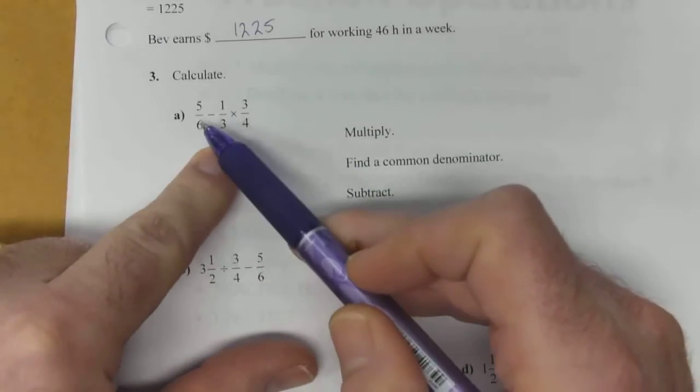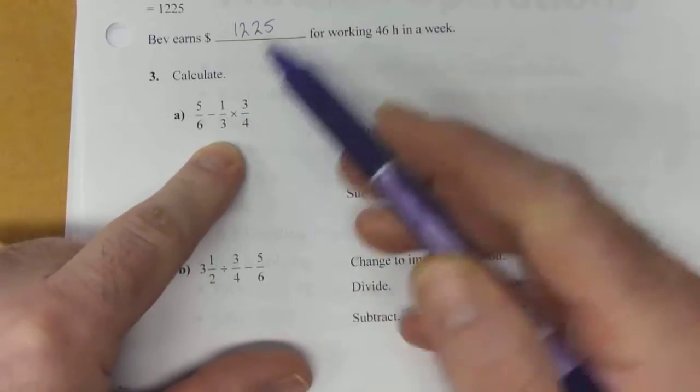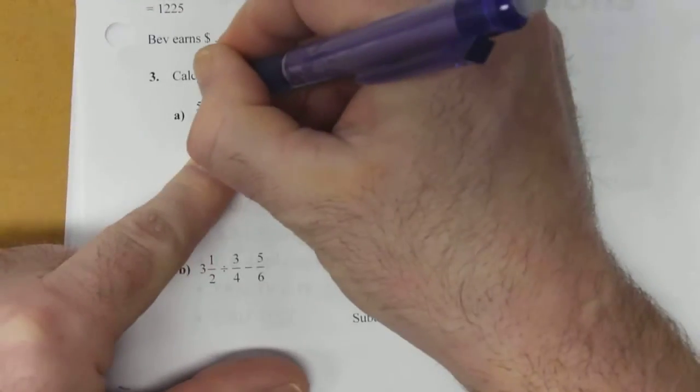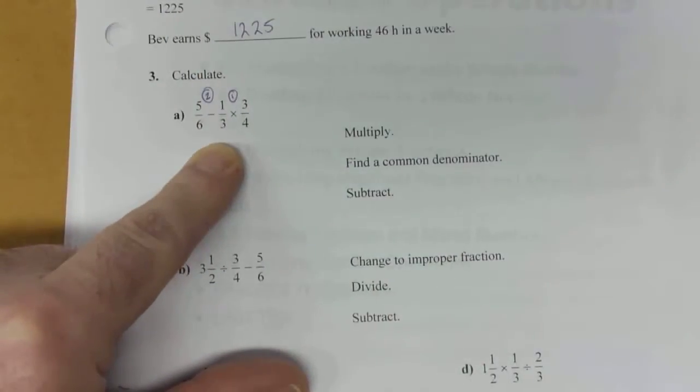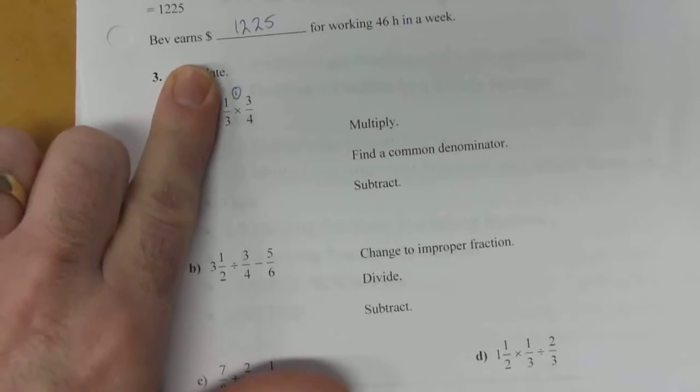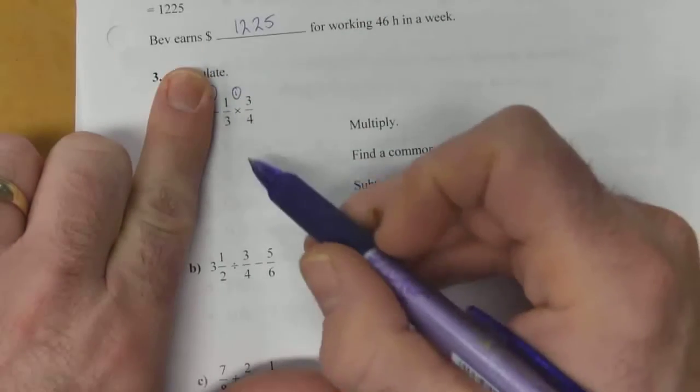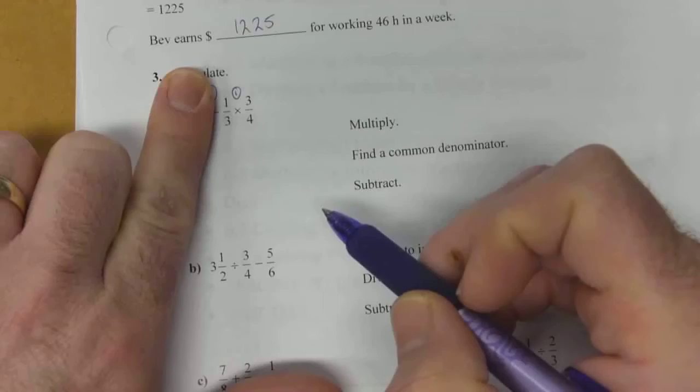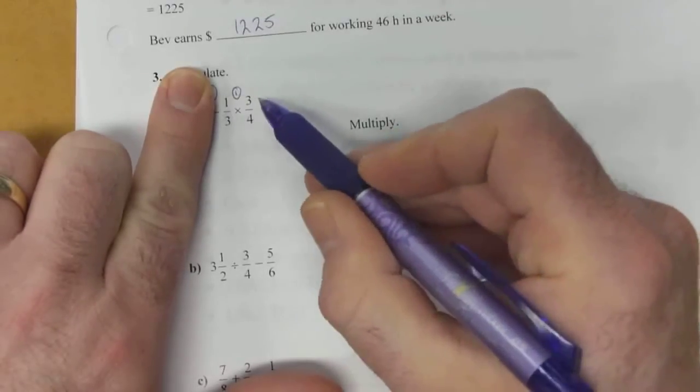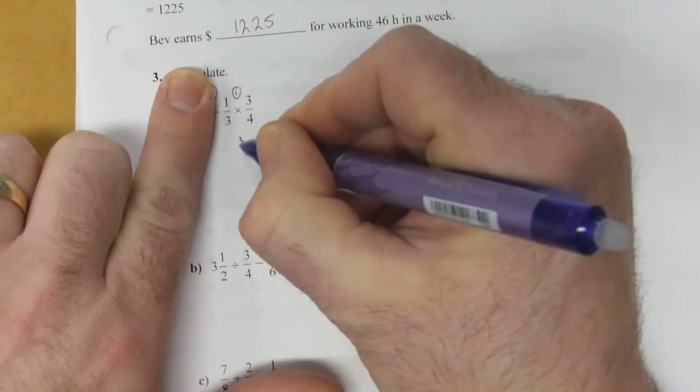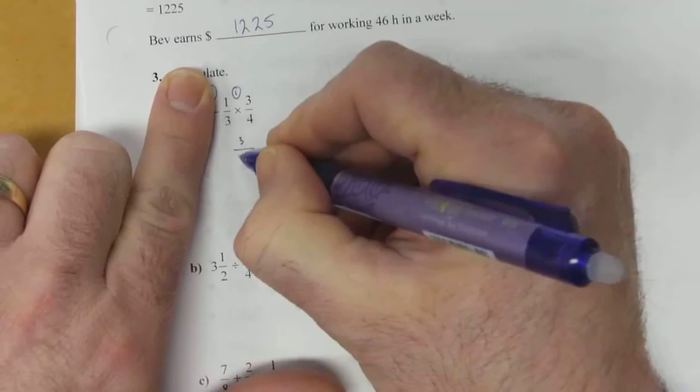Well, we've got subtracting and multiplying. Multiplying is going to be done first. Then our subtraction gets done next. So we're going to ignore the subtraction piece of this and just look at the fractions that are being multiplied. Multiplication, we multiply the tops. So 1 times 3 becomes 3. 3 times 4 is 12.